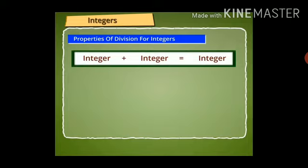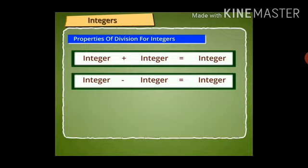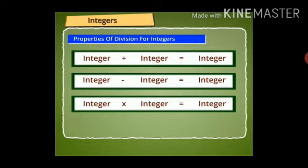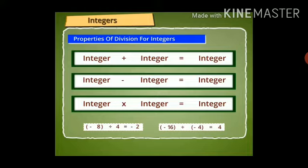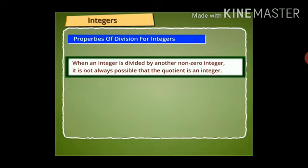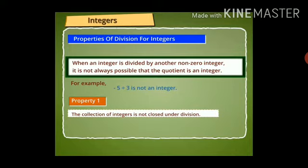Now we will discuss properties of division of integers. We have seen that if two integers are added, subtracted, or multiplied, the result is an integer. Let us see if an integer divided by a non-zero integer is always an integer. We know minus 8 divided by 4 equals minus 2, and minus 16 divided by minus 4 equals 4 — both integers. However, minus 5 divided by 3 is not an integer. Hence integers are not closed under division.